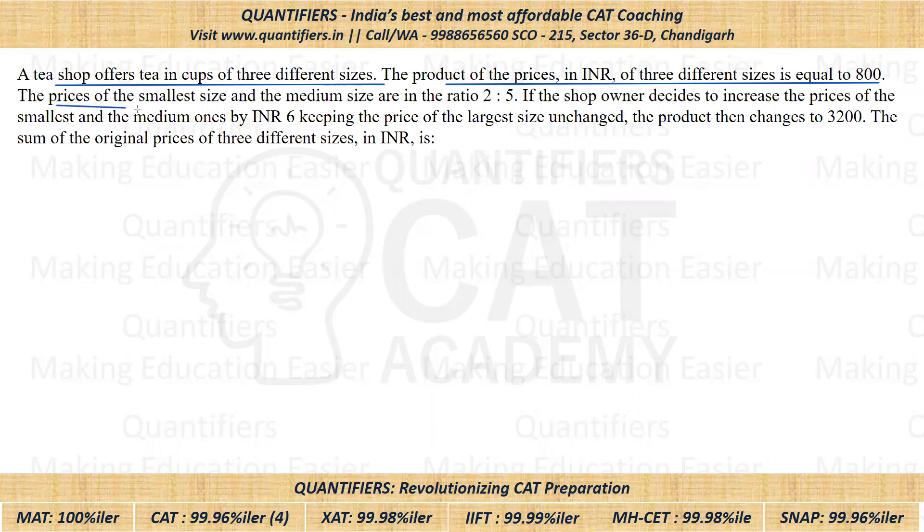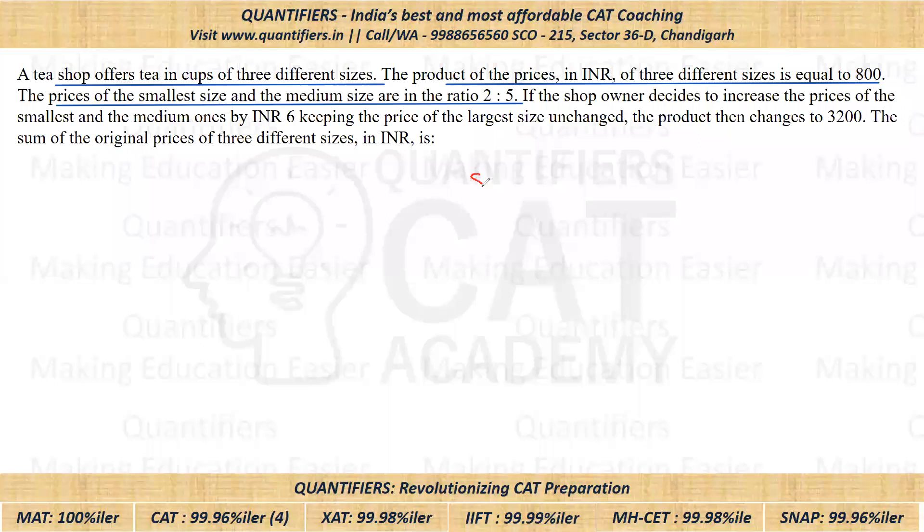Further, it is given the prices of the smallest size and the medium size are in the ratio of 2 to 5. Let's note down the information given. Smallest price we'll assume as 2x, and medium we'll assume as 5x.